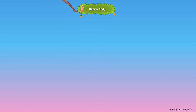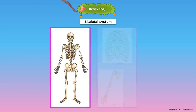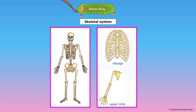The skeletal system is the framework of bones in our body that gives it shape and support. An adult human being has 206 bones. Bones are also made up of cells. The skeletal system consists of the skull, the spine or the backbone, the ribcage and the upper and lower limbs.